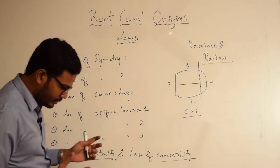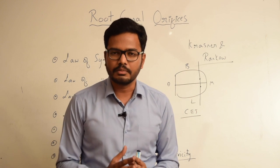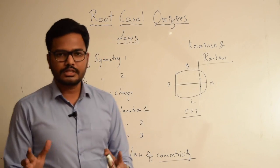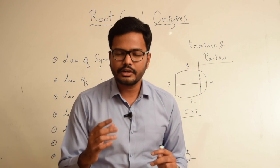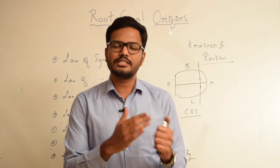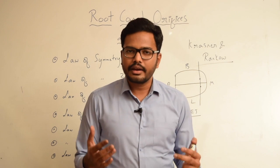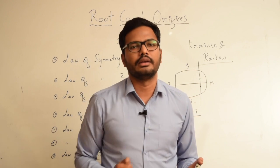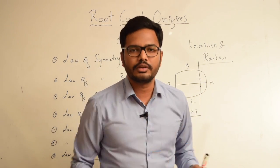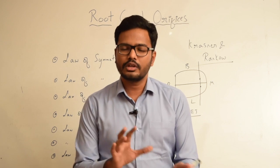According to the Law of Concentricity, the walls of the pulp chamber are concentric to the external outline of the tooth at the level of CEJ. For example, if there is a bulge on the tooth structure at the level of CEJ in the buccal aspect, then the pulp chamber also extends buccally into that bulge. Similarly, if a tooth such as a premolar is narrower mesodistally compared to its buccolingual width, then the pulp chamber is also narrower mesodistally.